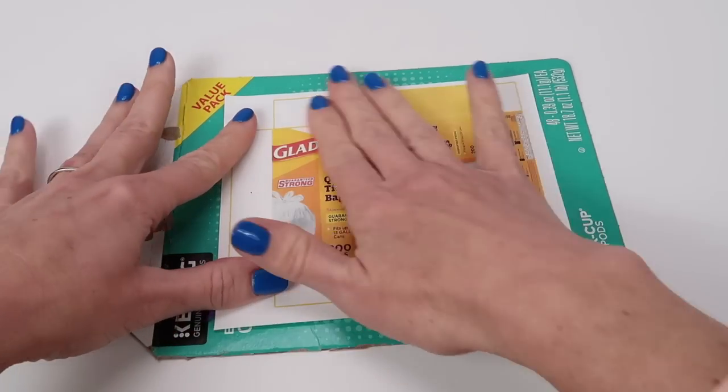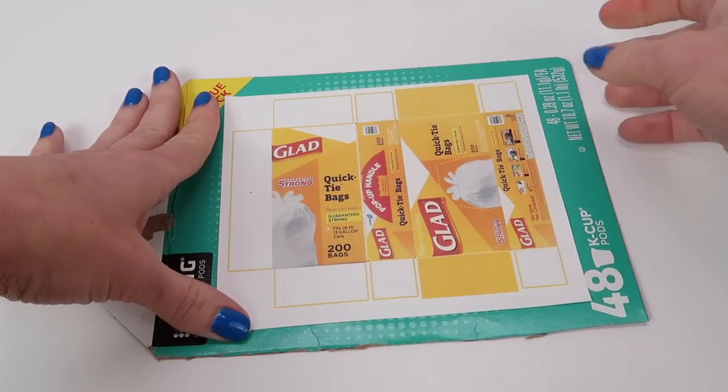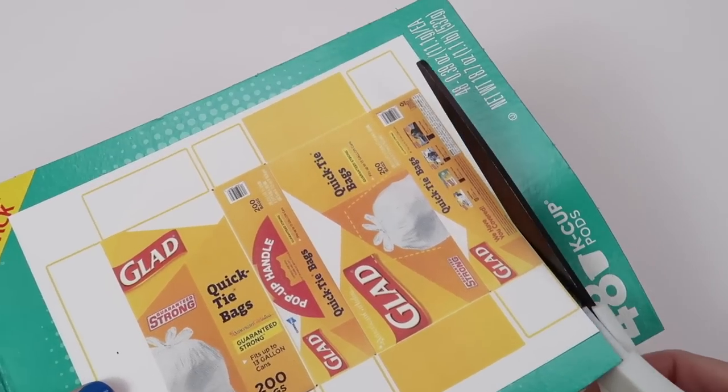You can use an old cereal box or whatever's in your cabinet before you throw it in the trash. Recycle it to make this box.